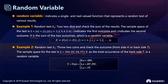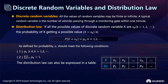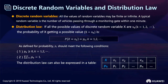Okay, let's learn about random variables and their distribution functions. Let's look at discrete random variables and distribution laws. Discrete random variables means all values of the random variable might be finite or countably infinite — such as the number of particles passing through an elementary gate within one minute. The distribution law describes the probability of each possible value of a discrete random variable.